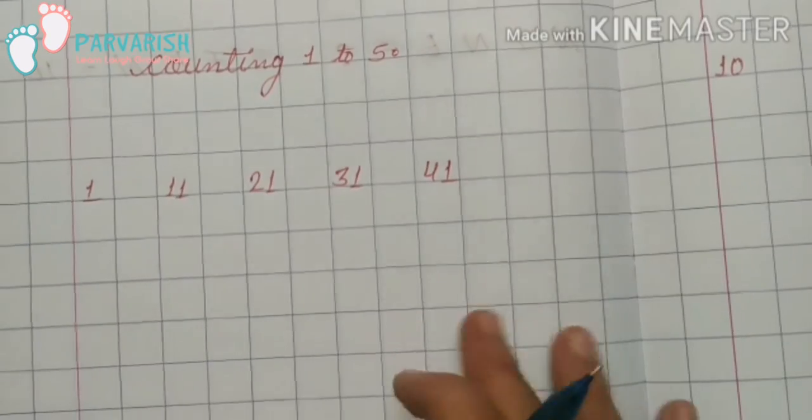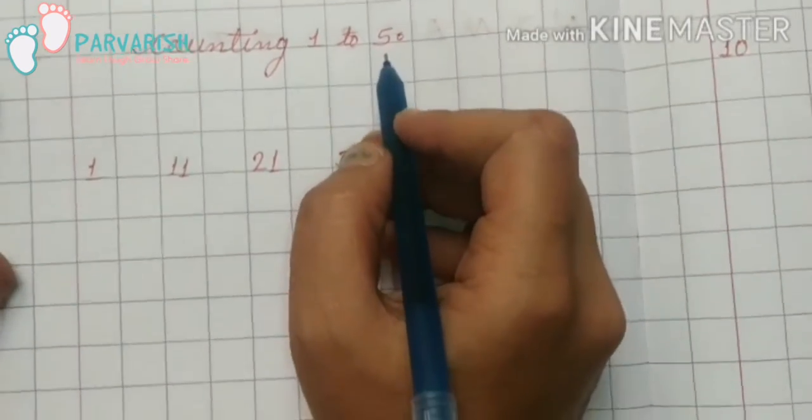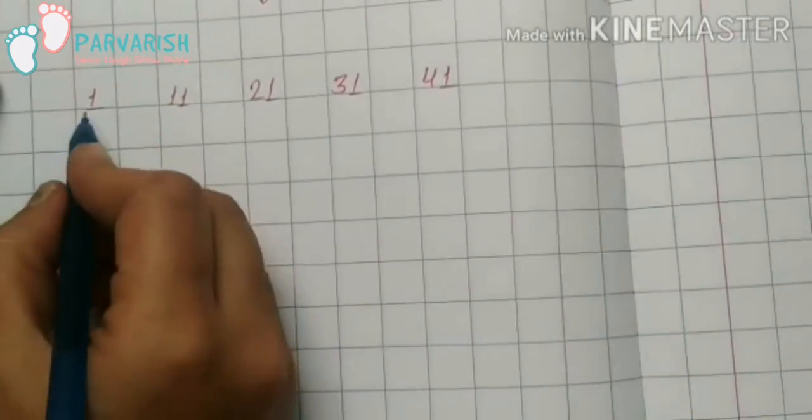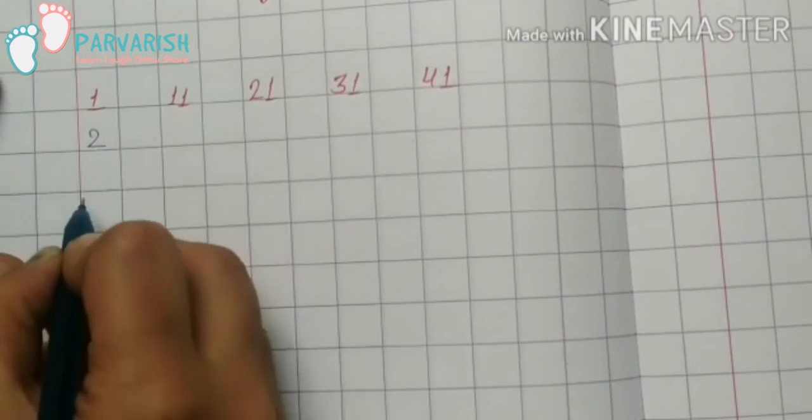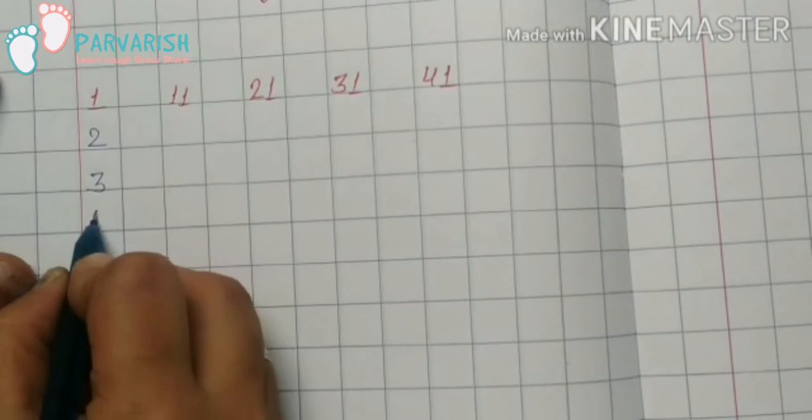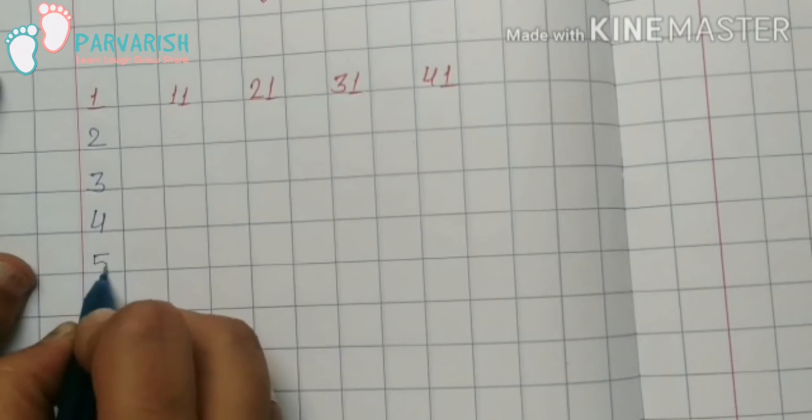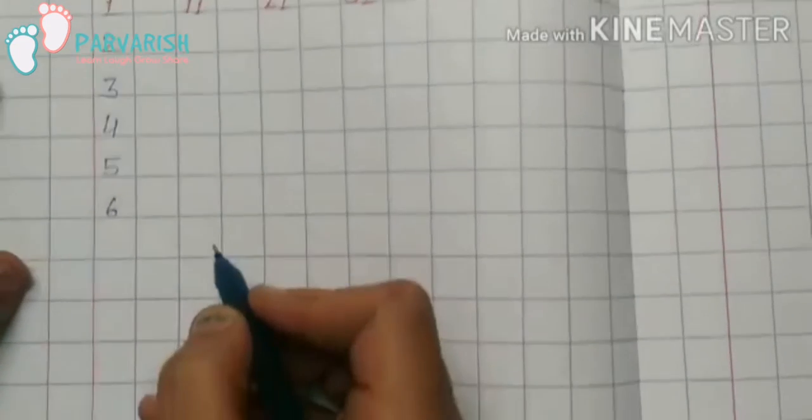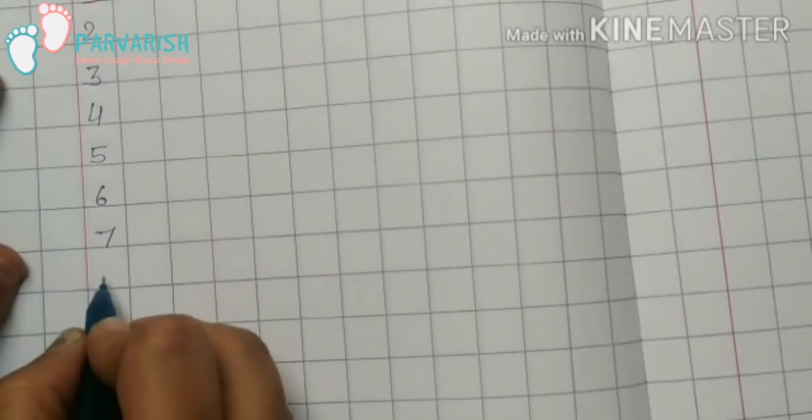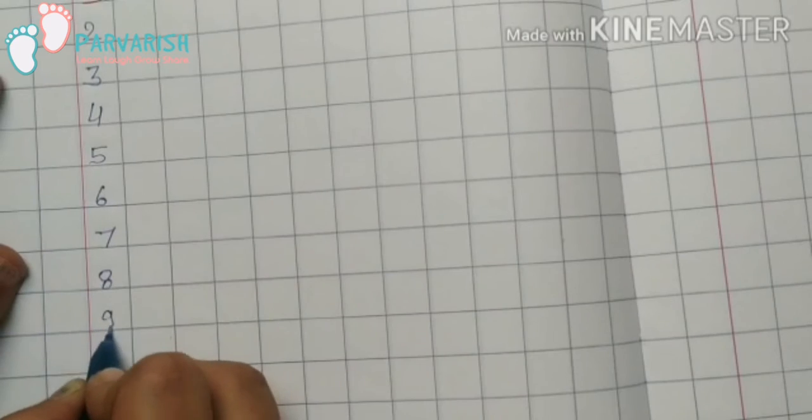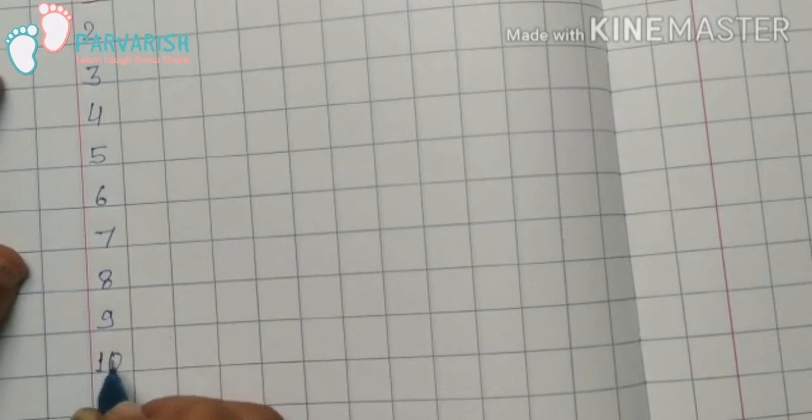In this video we are going to revise 1 to 50 counting. So let's start: 1, 2, 3, 4, 5, 6, 7, 8, 9, 10.